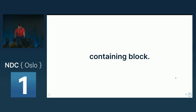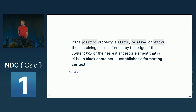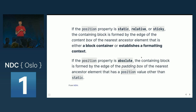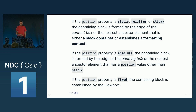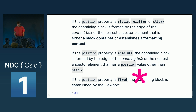This is a great segue to talk about the containing block, because in the previous example, the parent element of the headings was the containing block. I pulled this from MDN: if the position is static, relative, or sticky, the containing block is what you think it is. However, if the position property is absolute, the containing block is formed by the edge of the padding box of the nearest ancestor element that has a position value other than static. If the position property is fixed, the containing block is established by the viewport — except that's not always the case, and we'll see that as well.